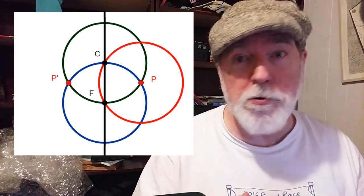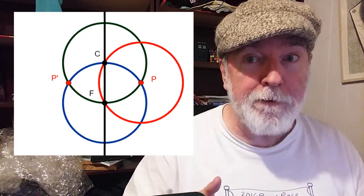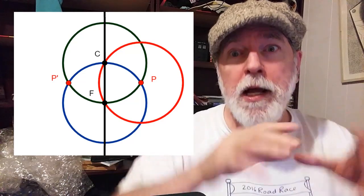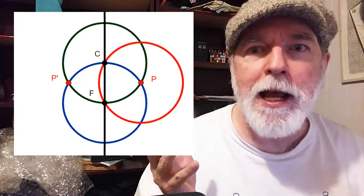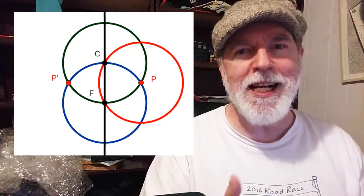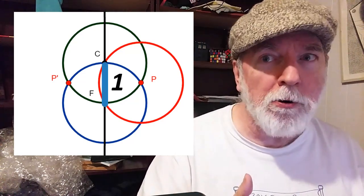That circle is going to go through C and F, so now we've got three equal circles, which we're going to say have a unit radius. That's how we're going to define our unit in this story.